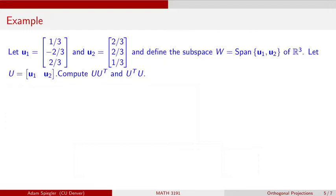u1 is the vector [1/3, -2/3, 2/3], and u2 is the vector [2/3, 2/3, 1/3]. If we take the inner product of these two vectors, we get 2/9 - 4/9 + 2/9, so that cancels out. The inner product is 0, so they're orthogonal to each other.